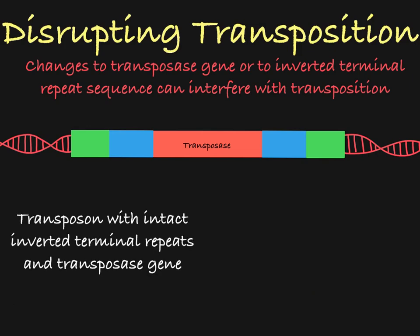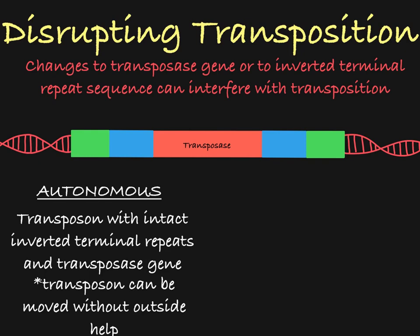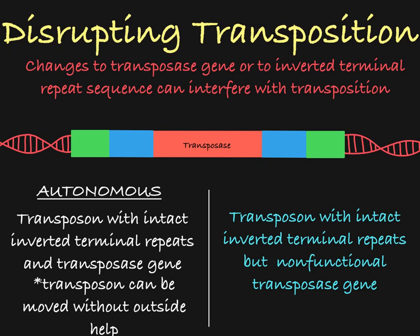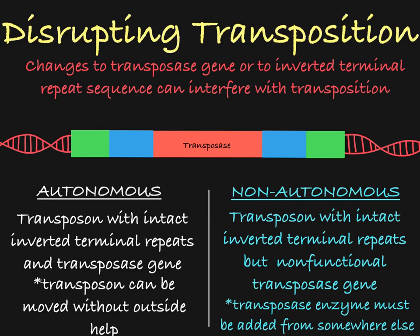We call a class II transposon with intact inverted terminal repeats and transposase gene autonomous. The transposon itself carries all the functionality that enables its excision and reinsertion into the genome. Conversely, a transposon without an intact transposase gene is called non-autonomous. It still can move, but the transposase needs to be provided by something else — another intact transposon, for example, or from a co-injected transposase expression plasmid, as we are using in the lab to make transgenic animals. So transposons with a defective or even absent transposase gene can still be excised and reinserted into the genome if the transposase is provided in trans — that means by a different entity than the transposon itself.